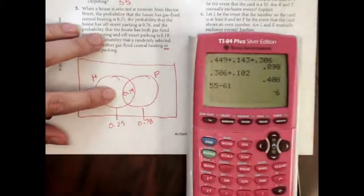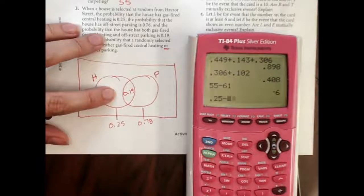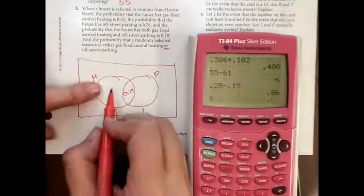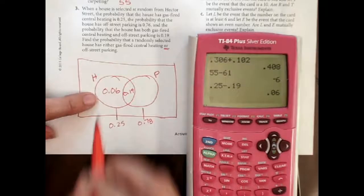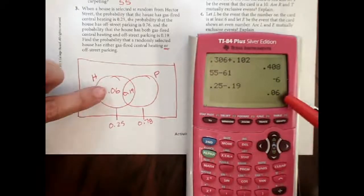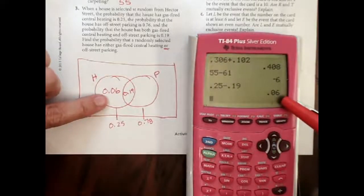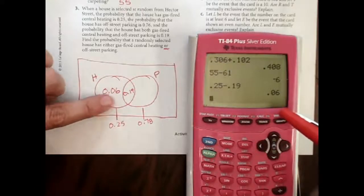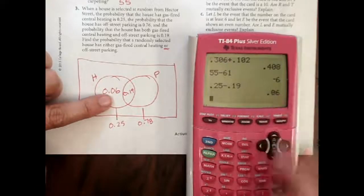So I just need to do 0.25 minus 0.19 to get this one. And you do need to be careful, 0.06 is not the same thing as 0.6. That is not the same thing as this.